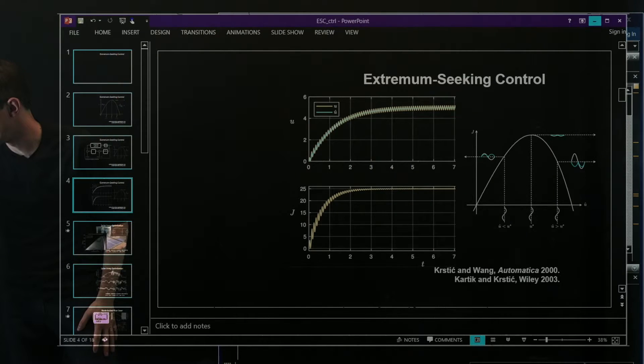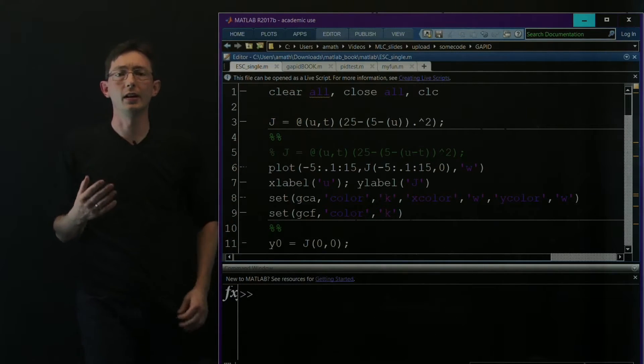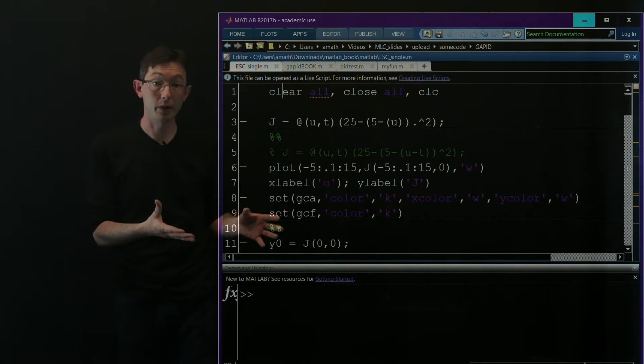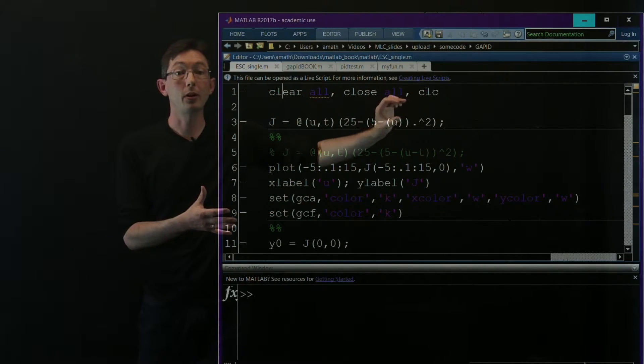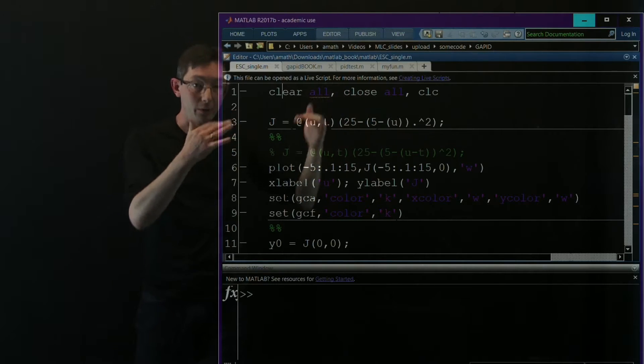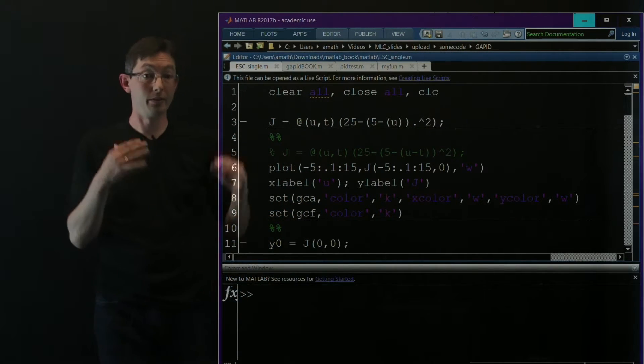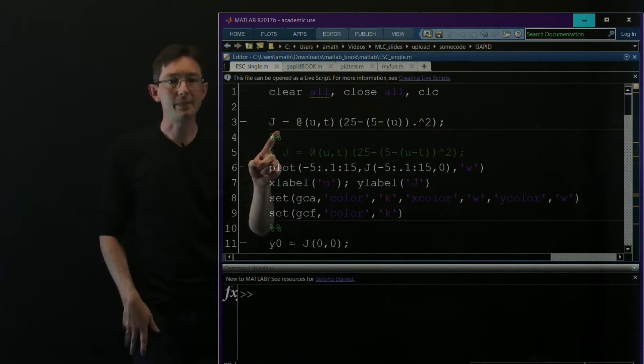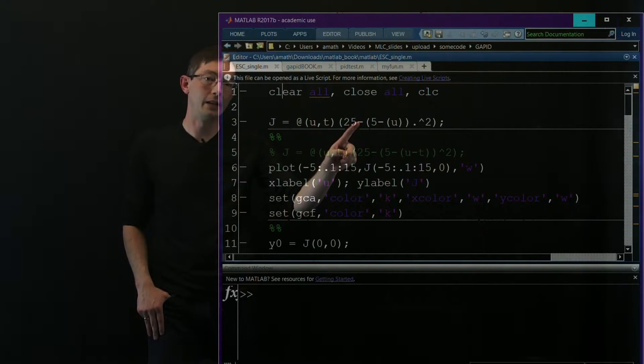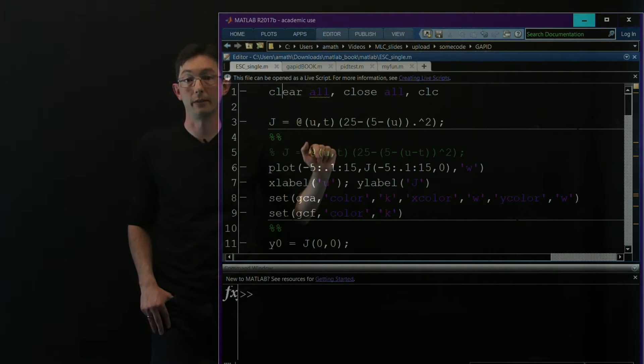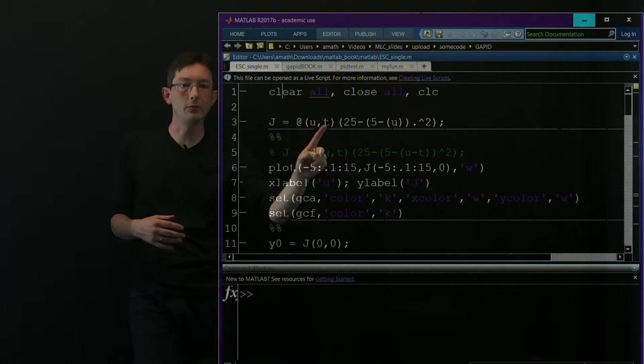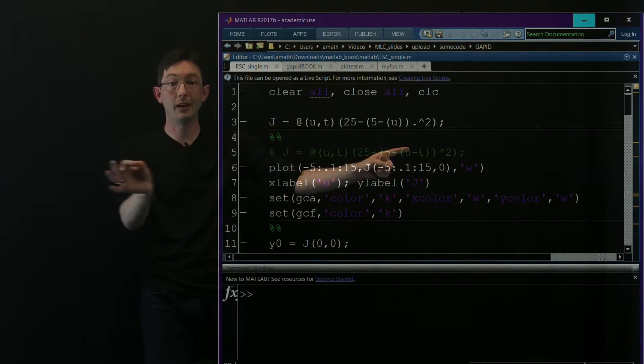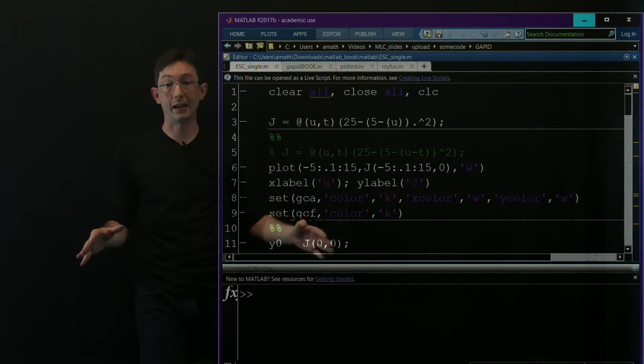Okay so let's do this in MATLAB. In MATLAB I have a script here, you can download this from the internet. This is also in our data-driven science and engineering book. What we're going to do is basically cook up our own cost function which is static, and then we're going to write the extremum seeking control algorithm to optimize for the static objective function. In this case my objective function j is 25 minus (5 minus u) squared. I have this as a function of u and t so that in the future I can make this set point time varying, but for now this is just static in time.